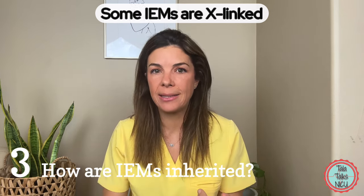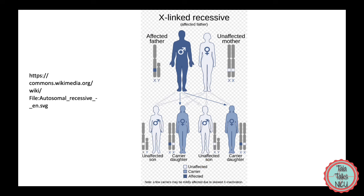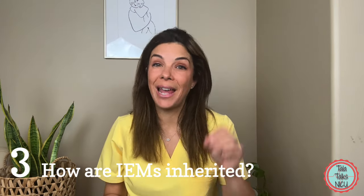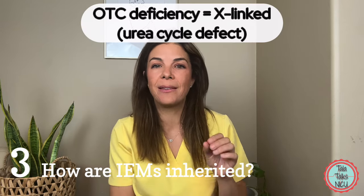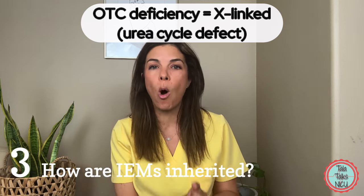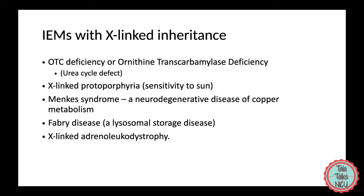Some IEMs are inherited in an X-linked manner. X-linked diseases are going to be expressed in males, so males get really sick, while females are generally just carriers. The disease tested most with X-linked inheritance is OTC deficiency — ornithine transcarbamylase deficiency, a urea cycle defect. Others include X-linked protoporphyria, where patients get horrible sensitivity to the sun; Menke syndrome, a neurodegenerative disease of copper metabolism; Fabry disease, a lysosomal storage disease; and X-linked adrenoleukodystrophy. These are the most common X-linked inborn errors of metabolism.